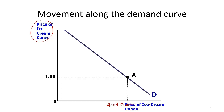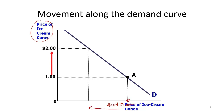Suppose the price is now $1 — at $1 they are buying a certain quantity. Now as price increases to $2, purchase decreases. So as price increases, quantity purchased decreases from one point to another. Essentially, you are moving from point A to point B on the demand curve. As price increases, you move from point A to B — that is movement along the demand curve.